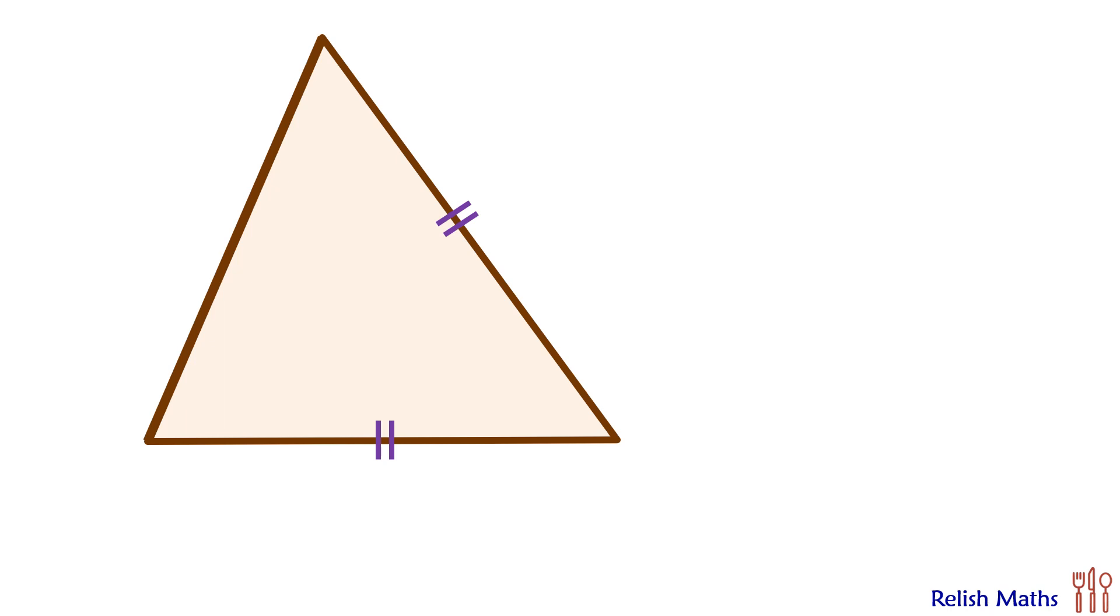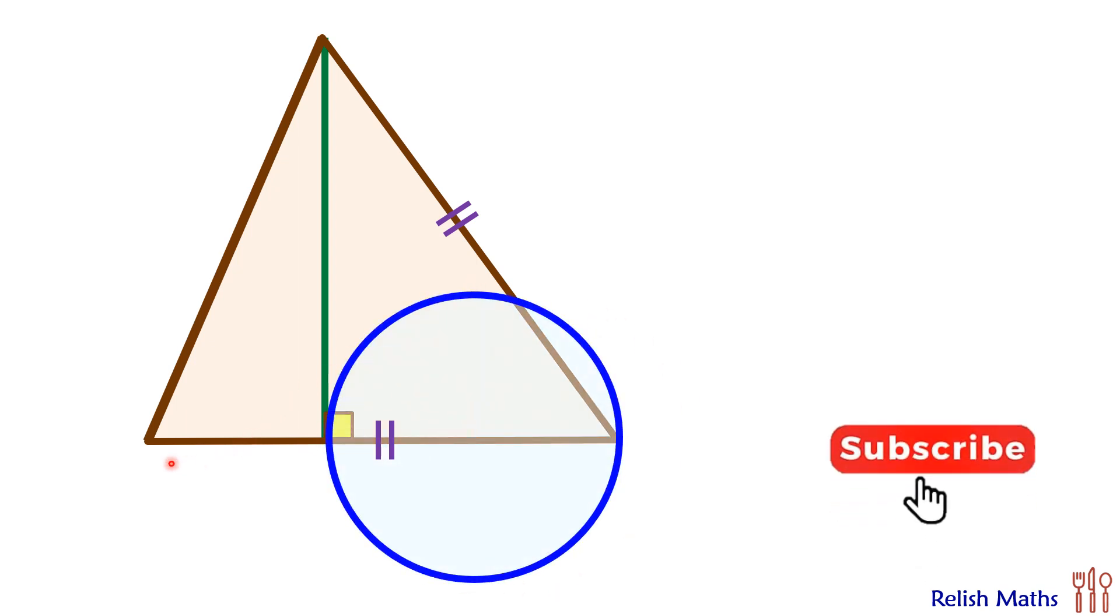Welcome everyone. In today's question we are given an isosceles triangle in which we are drawing an altitude from the vertex. Using this length as the diameter we are drawing a circle, and from this vertex we are drawing a tangent to the circle whose length is given as 10 cm. If the side length of this triangle is x, the question is to find the value of x.